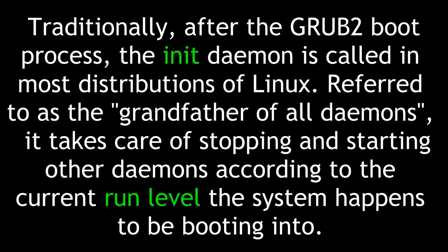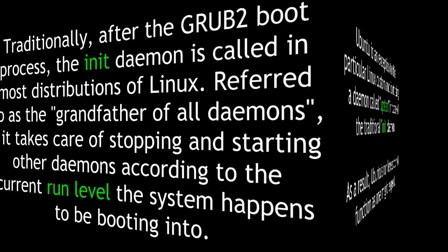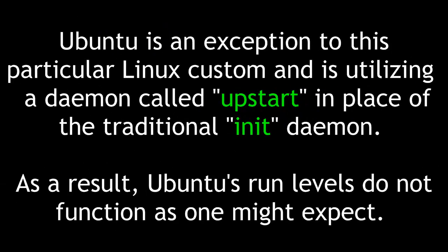Traditionally, after the GRUB2 boot process, the init daemon is called in most distributions of Linux. Referred to as the grandfather of all daemons, it takes care of stopping and starting other daemons according to the current run level the system happens to be booting into. Ubuntu is an exception to this particular Linux custom, and is utilizing a daemon called upstart in place of the traditional init daemon. As a result, Ubuntu's run levels do not function as one might expect.